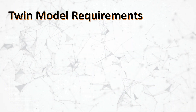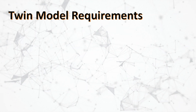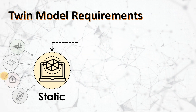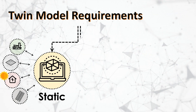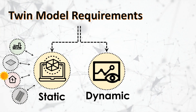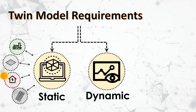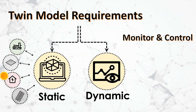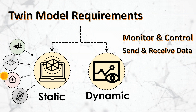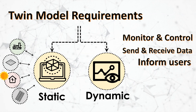The twin model must have static and dynamic data integrated to power up the building. Static could be the information model of the building — a BIM model. Dynamic is how we collect operational information throughout the building lifecycle. So digital twin enables building users to monitor and control building entities, send and receive data, and continuously inform the user about the actual state of the asset.